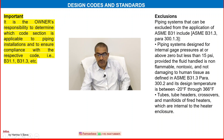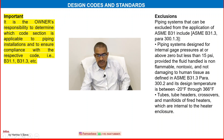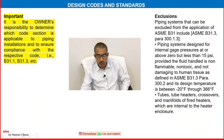Some exclusions from the application of ASME B31 are included — see ASME B31.1 para 300.1.3. Piping systems designed for internal gauge pressures at or above 0 but less than 15 PSI may be excluded, provided the fluid handled is non-flammable, non-toxic, and not damaging to human tissue as defined in ASME B31.3 para 300.2, and its design temperature is between minus 200°F and 366°F. Also excluded are tubes, tube heaters, crossovers and manifolds of fired heaters which are internal to the heater enclosure.